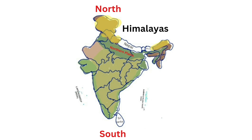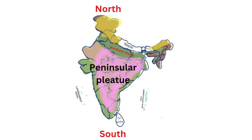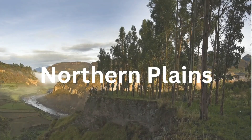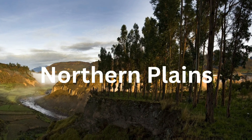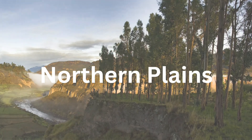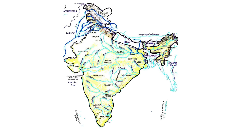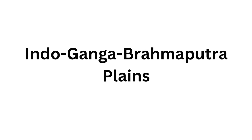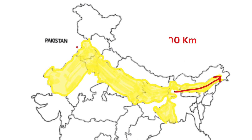Eastern plains cover the Brahmaputra valley and delta region. Northern Plains are located between the north of the Himalayas and south of the Peninsular Plateau, also called the Deccan Plateau. The Northern Plains are spread over an area of about 7 lakh square kilometers. These are formed by the deposition of sediments brought by three main river systems: the Indus River and its tributaries, the Ganga River and its tributaries, and the Brahmaputra River and its tributaries, together called the Indus-Ganga-Brahmaputra Plains.